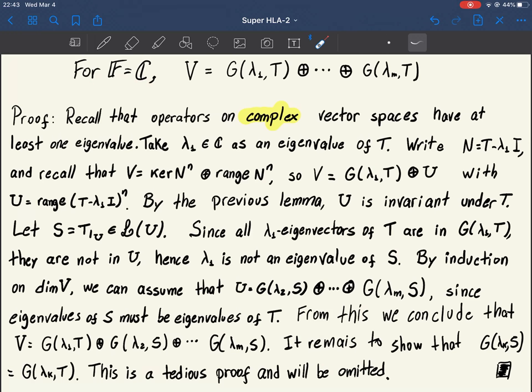We know that for real spaces some operators do not even have eigenvalues. So it has to be complex and the property of complex operators that we're going to use is exactly this one: that it has at least one eigenvalue.